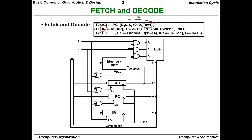Since we are dealing with the instruction cycle, the instruction register (IR) is central. The program counter (PC) always points to the current instruction location. The address register (AR) holds the current address. The data register (DR) and accumulator are not used here. A single clock is connected to all three relevant registers.